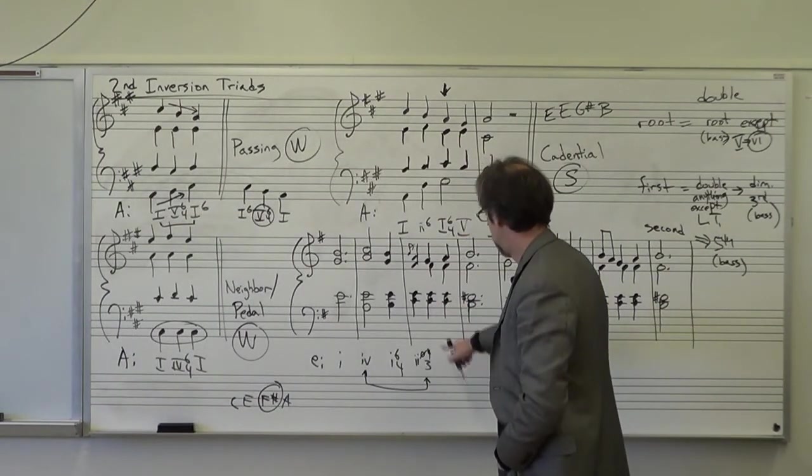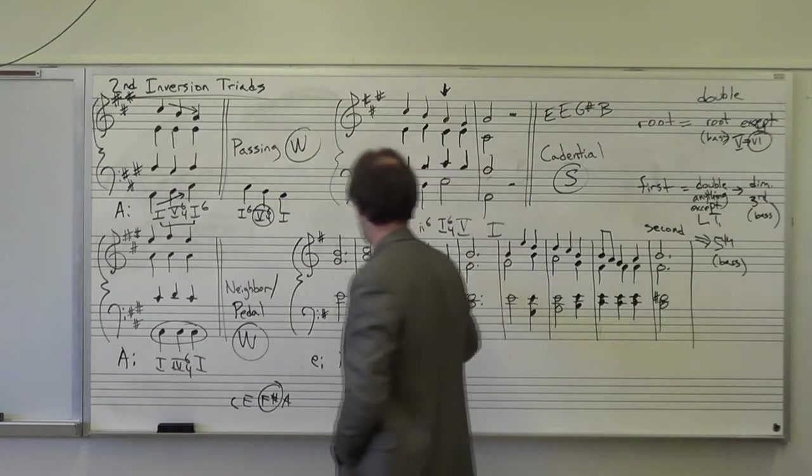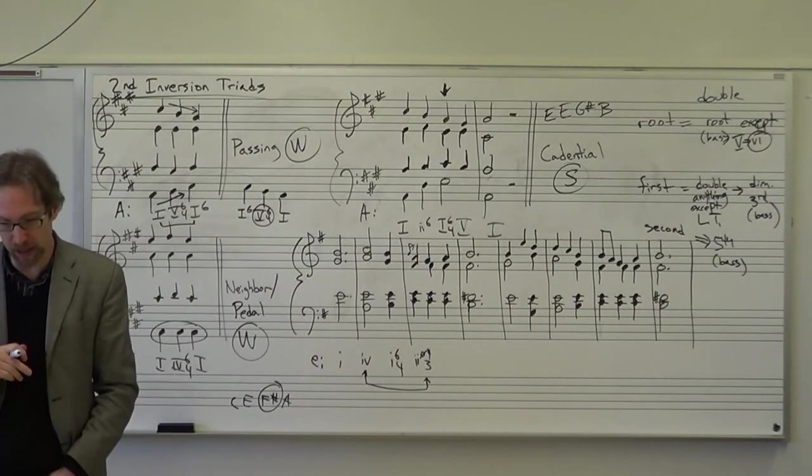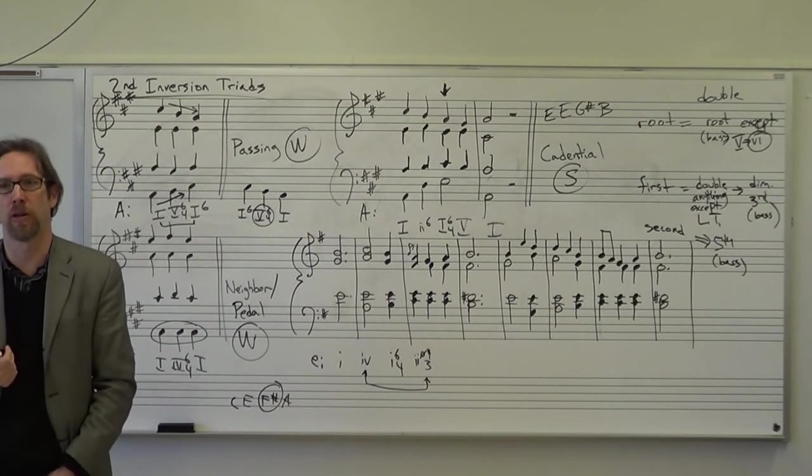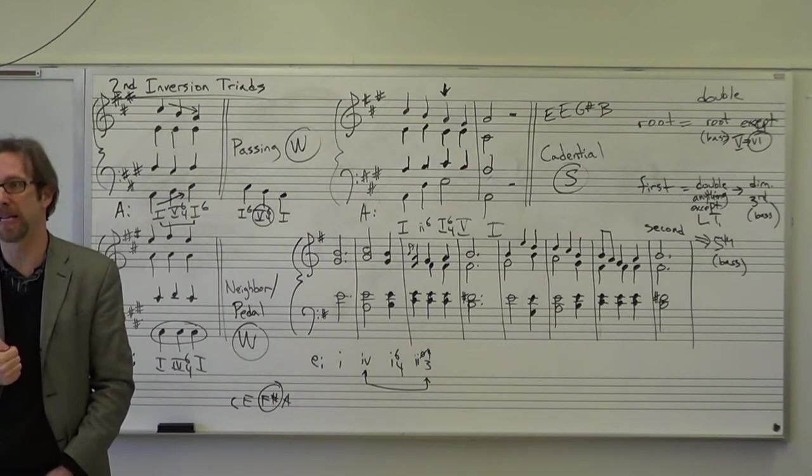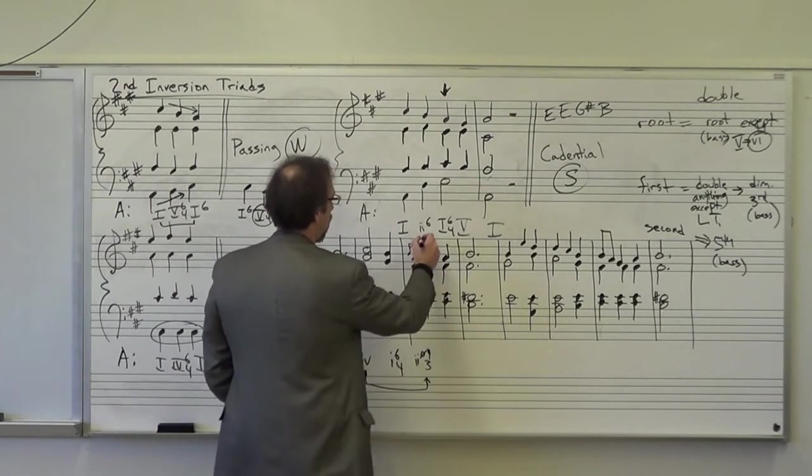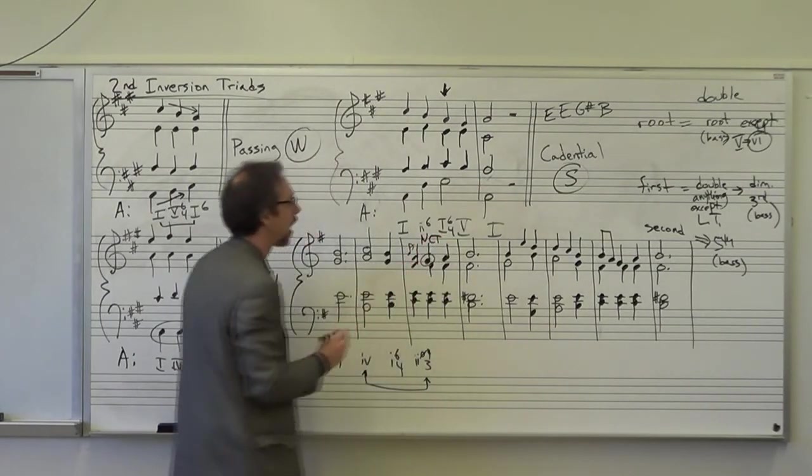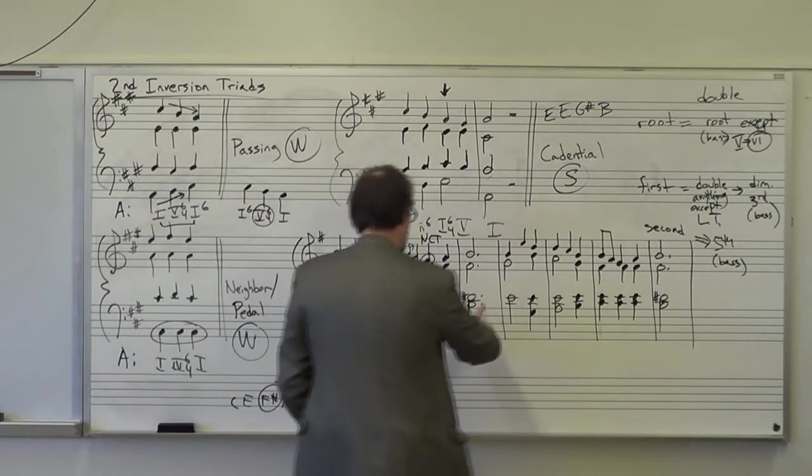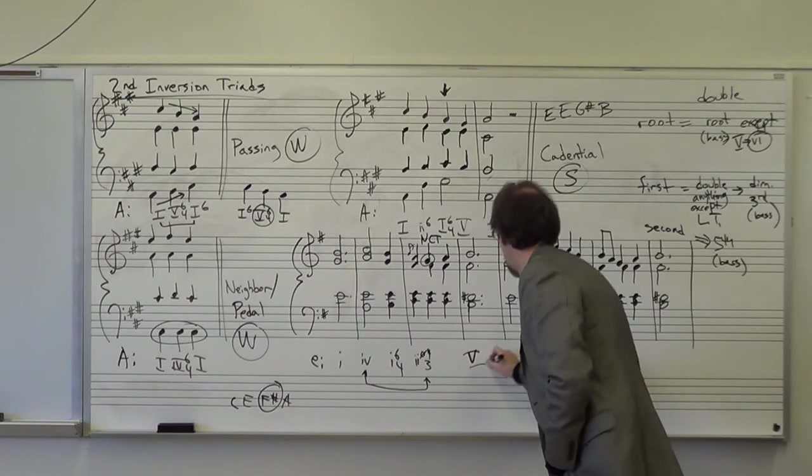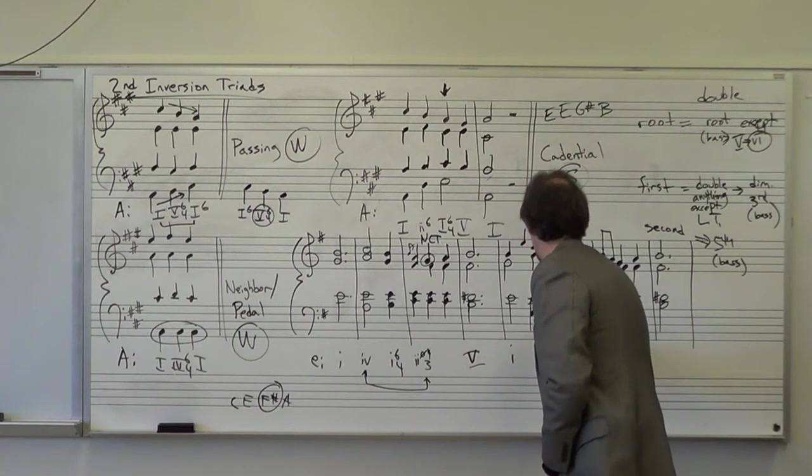This entire measure is the 2 half diminished, 4-3. This G here, and this is where things get a little complicated, it's not part of the chord. There's no chord that that makes sense to be in. So, you could circle it and just label it NCT, non-chord tone. So, our next chord that we would recognize, B, D-sharp, F-sharp, B. That would be our 5 chord. We go back to our 1 chord. 1-6.